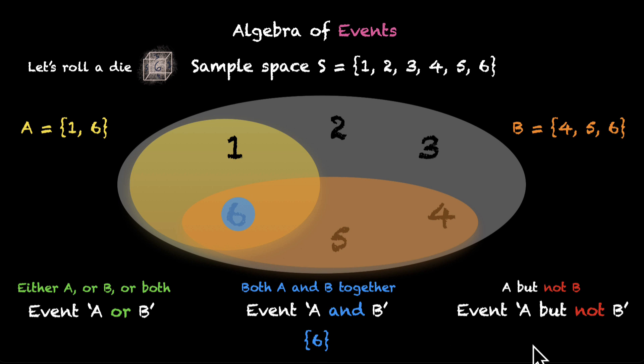Let's look at the third one. Event A but not B. So, we want A to happen but not B. So, we'll look in the yellow circle and figure out what we have that's outside this orange circle. So, that's the number 1. Which means event A but not B is this event which has 1 in it.